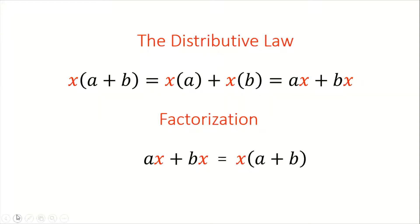Now, just a look at the distributive law. If we have x times (a plus b) in a bracket, then the distributive law states that we should use the term on the outside to multiply each term on the inside. So that would equal x times a plus x times b, which would simplify to give us ax plus bx.